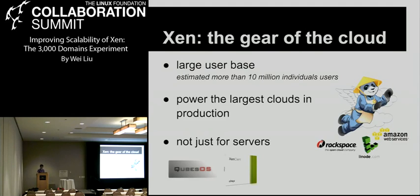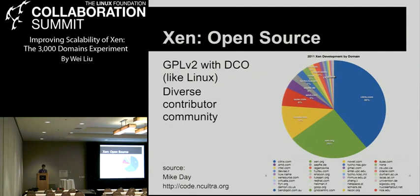Xen has a very large user base, estimated more than 10 million individual users, and powers the largest cloud in the world. It is also the foundation for several client-side projects like Qubit OS and ZenKai. The most important bit to the open source community is that it is completely open source, released under GPLv2 with classpath exception, just like Linux. If anybody wants to hack Xen, just clone the tree, write your patch, sign it off, and send it to the Xen development mailing list.